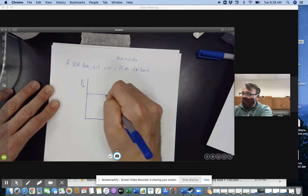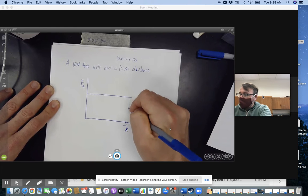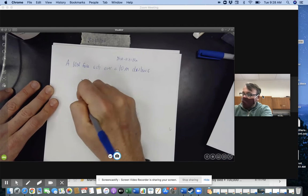Well, this graph would look like just like that. If this was 10 meters, and this is 10 newtons, right?